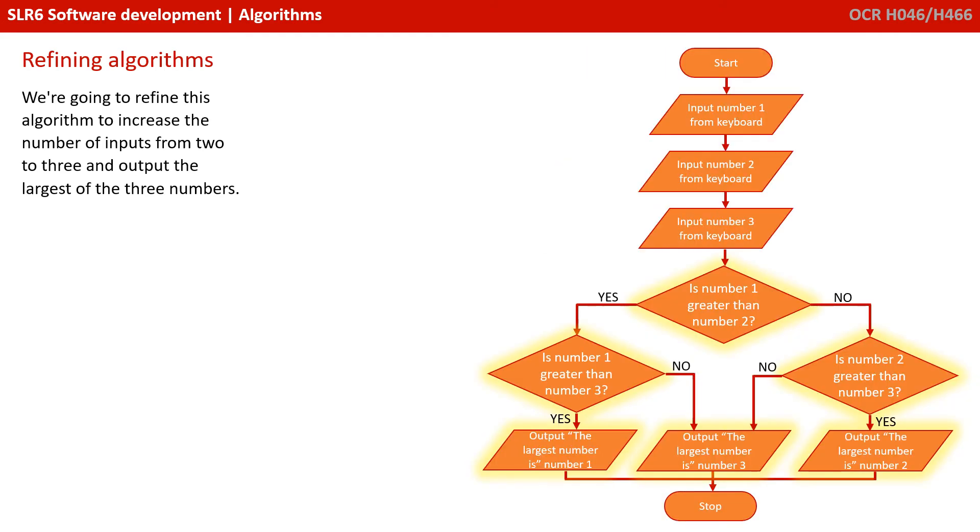And here you can see our refinement. So, we've still got the is number one greater than number two. But then if the answer is yes or no, we're performing another check. And depending on the result of that, we're either outputting number one, two or three is the largest.